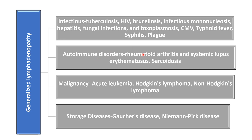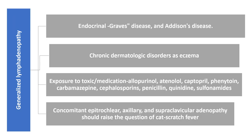Autoimmune disorders — for example, juvenile rheumatoid arthritis, SLE, and sarcoidosis — can cause generalized lymphadenopathy. In malignancy, acute leukemia and lymphoma (both Hodgkin and non-Hodgkin) will lead to generalized lymphadenopathy. Storage disorders such as Gaucher disease and Niemann-Pick disease can lead to generalized lymphadenopathy. Some endocrine disorders — Graves' disease and Addison's disease — can also lead to generalized lymphadenopathy. Some chronic dermatological conditions such as eczema can lead to generalized lymphadenopathy.